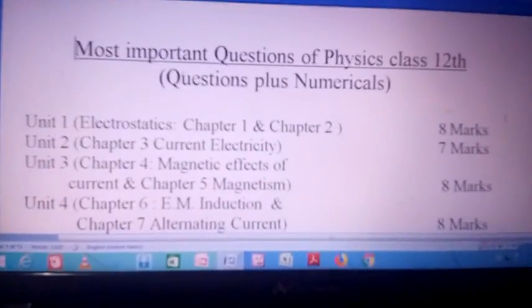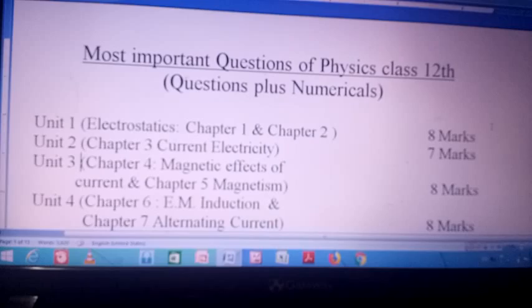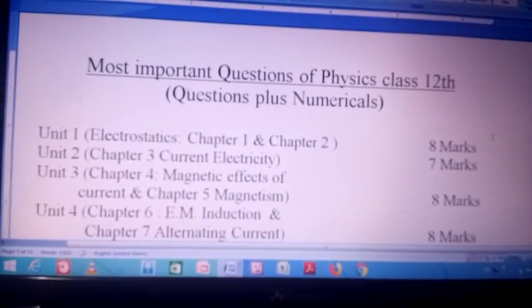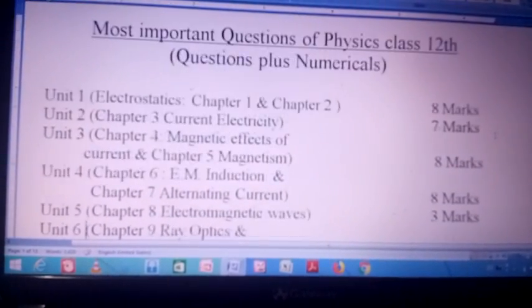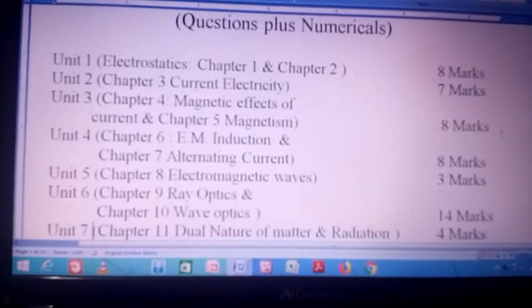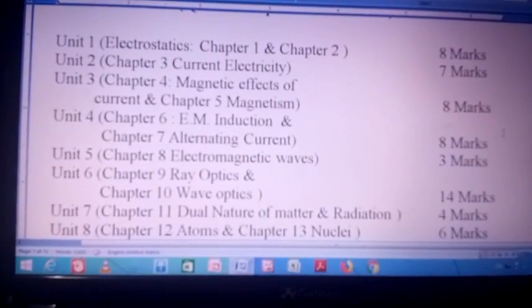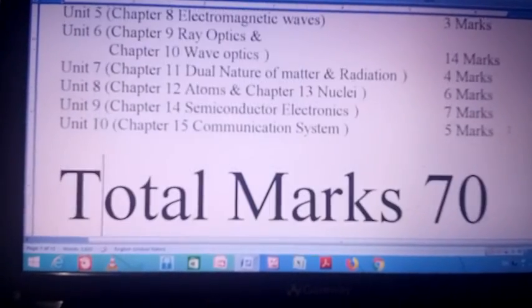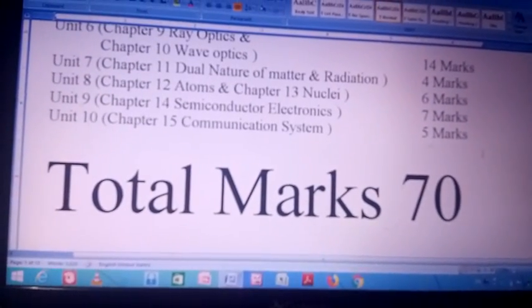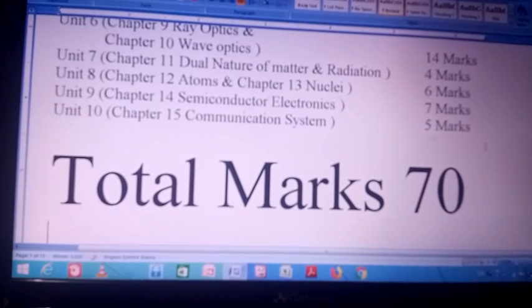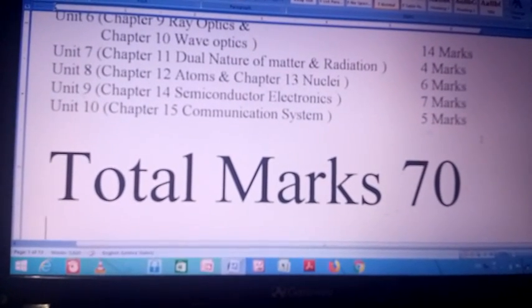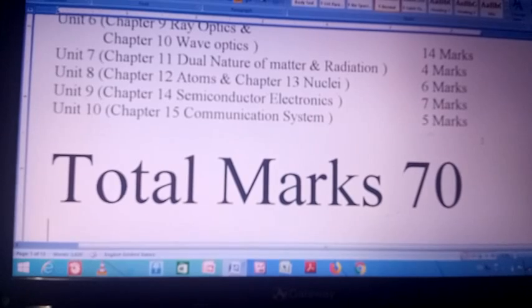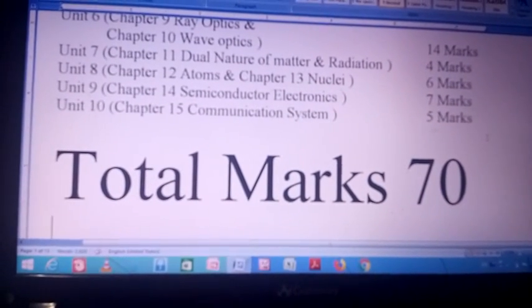Students, as I told you, unit 1 has 8 marks and includes chapters 1 and 2. Unit 2 is 7 marks, unit 3 is 8 marks, and unit 4 is 8 marks. After that we have optics. Optics is a basic topic. In optics the maximum paper comes, which is 14 marks paper. Then unit 7 is 4 marks, unit 8 is 6 marks, unit 9 is 7 marks, unit 10 is 5 marks, total 70 marks.